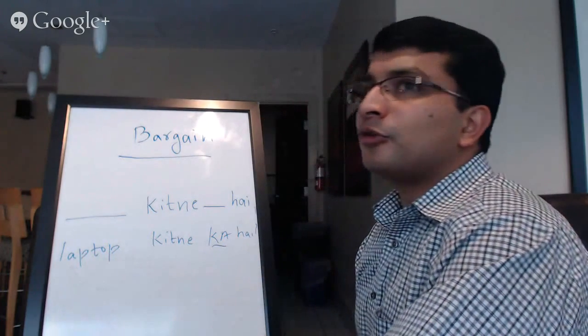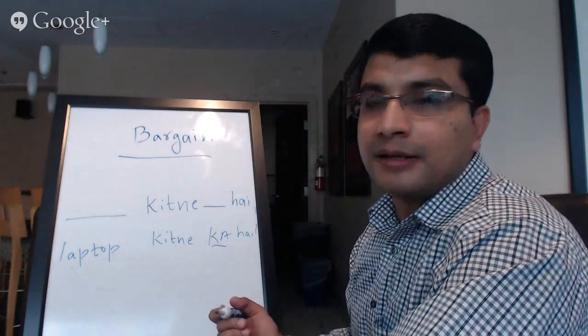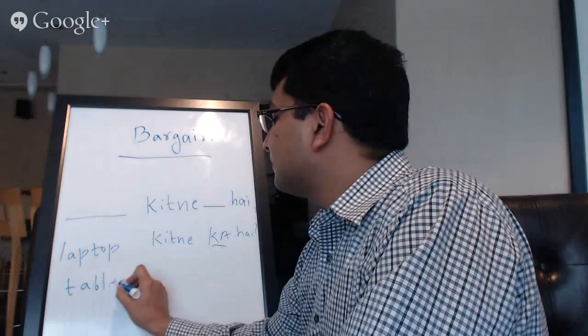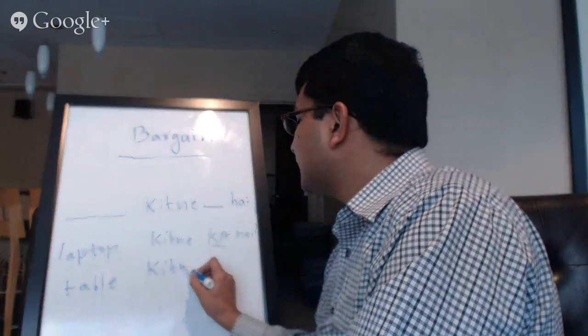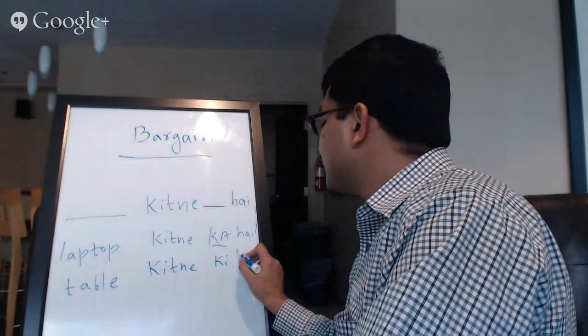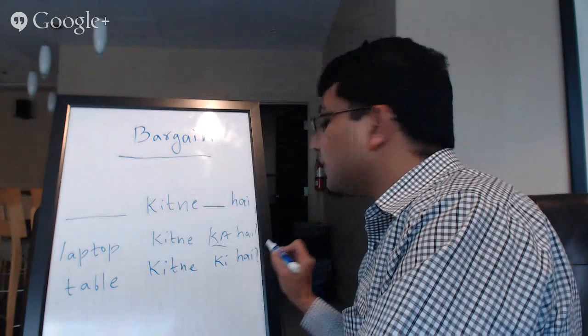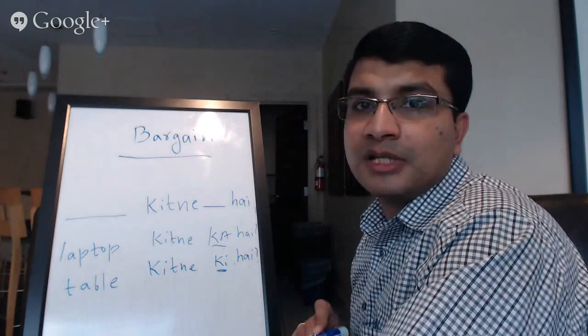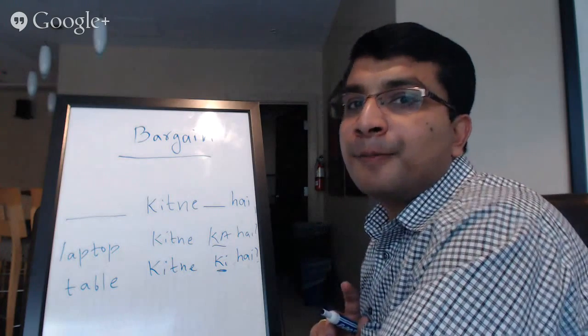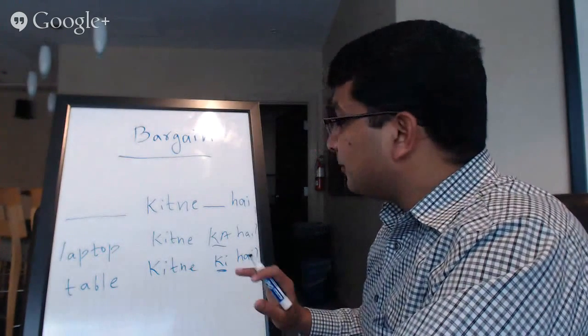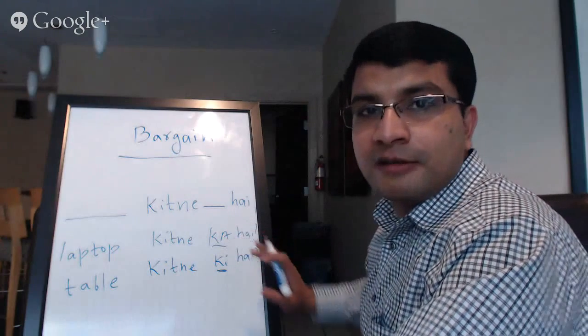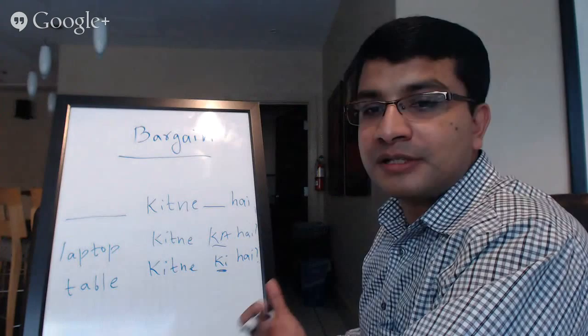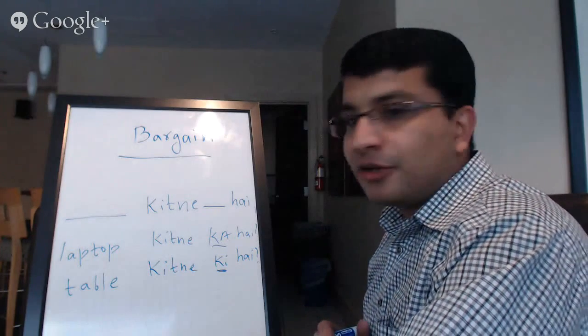And then let's say you're going to a furniture shop, and you see a table you really like. You will be asking table Kitne ki hai. Now, in case of table, you use ki because table is considered feminine singular. Don't worry about it if you make a mistake here. I'll try to repeat it again and again so that way it will be strengthened in your case.